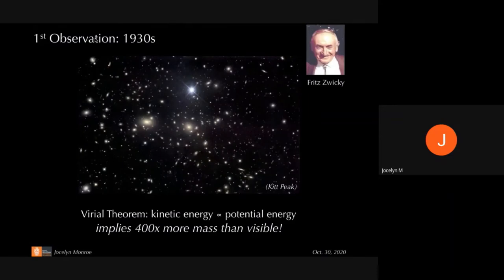The first observation of dark matter came in the 1930s when an astronomer named Fritz Zwicky made observations of a gravitationally bound cluster of galaxies called the Coma Cluster. All the bright spots in this picture are each one a galaxy. Zwicky developed a new way to measure the mass gravitationally bound in this cluster, rather than just estimating from how bright the objects are. He used the Virial Theorem, measuring the speed at which galaxies move to infer, based on their velocities, how much mass was interacting gravitationally.